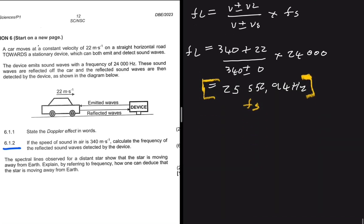This frequency now becomes our fs, reflected back to our device. So now we have fl being equal to v plus or minus vl divided by v plus or minus vs multiplied by the frequency emitted by the source. What is fl? fl is what we're looking for - the frequency that is detected by the device after it has been reflected.